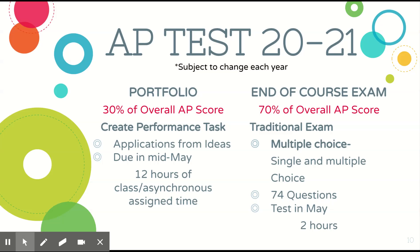The AP test is a little different than some other courses — there are two pieces to it, and it actually just changed this year. One portion is the end-of-course exam, like a traditional AP course. It's 70% of your total score, it's 74 questions, and they're multiple choice — what they call single and multiple choice, meaning one answer or several answers. That test is in May, it's about two hours long, and depending on the world, it's either in person or online.